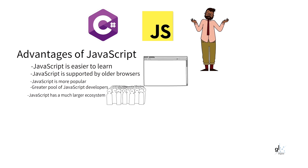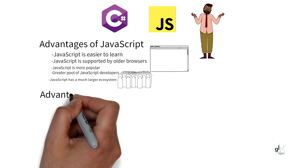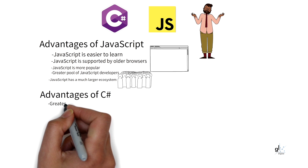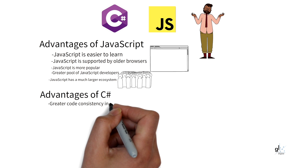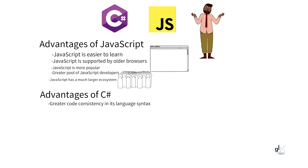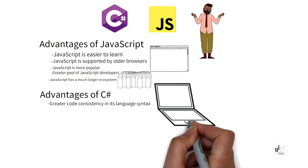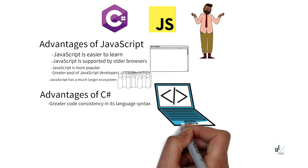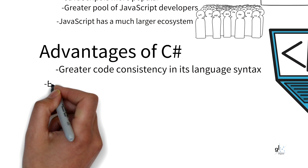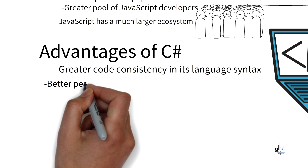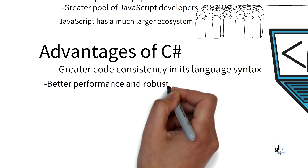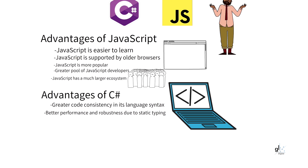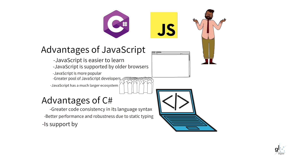Let's look at some of the advantages of using C#. C# exhibits greater consistency in its language syntax compared to JavaScript in its raw form. C# is statically typed, which means code is more performant and robust at runtime than dynamically typed JavaScript code. C# has the support and heavy investment from Microsoft, the largest software company in the world.